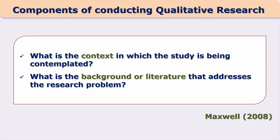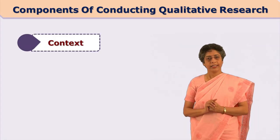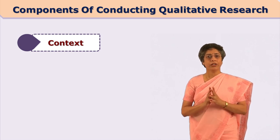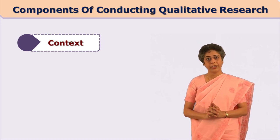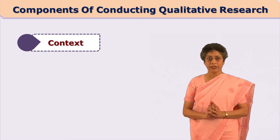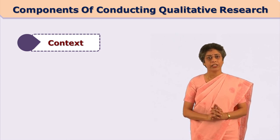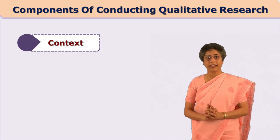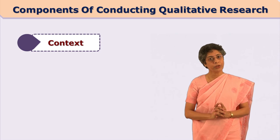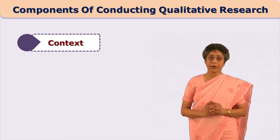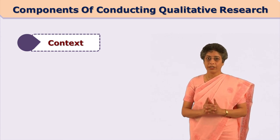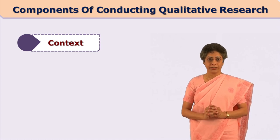The second component is context of the study — the context in which the study is being contemplated. What is the background or literature that addresses the research problem? In this component, we try to find out the context of the entire research. Considering the example of the tribal area and the doctor's intervention, context is very important in qualitative research: which culture are we going to study, which phenomena are we going to analyze, and in which context?